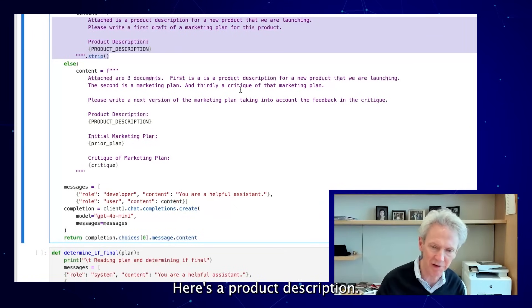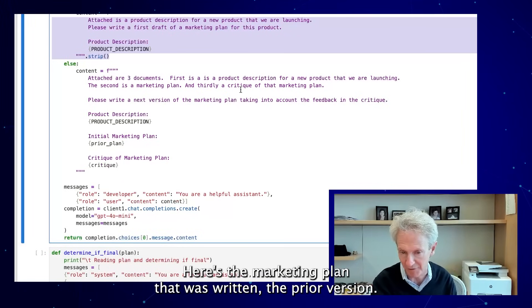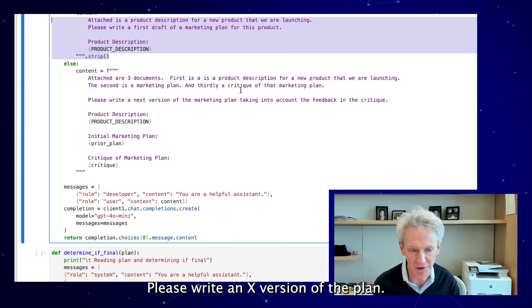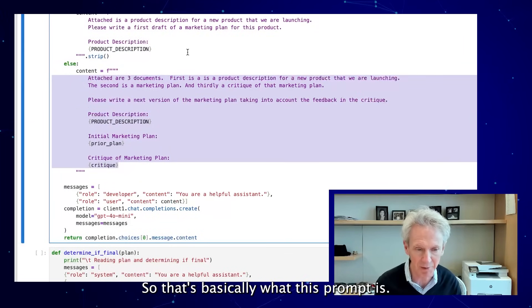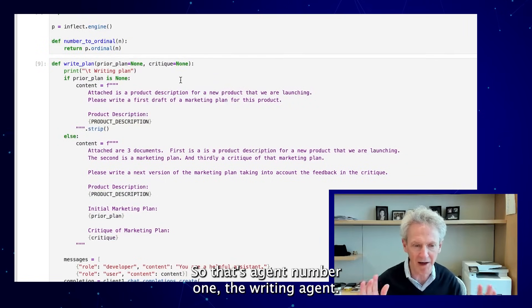When there is a prior plan, like you're doing a revision, I just change the prompt slightly. Here's a product description, here's a critique, here's the marketing plan that was written, the prior version. Here's a critique of that marketing plan. Please write a next version of the plan. That's basically what this prompt is. That's agent number one, the writing agent.